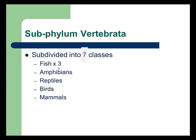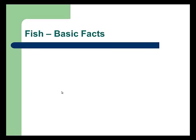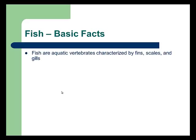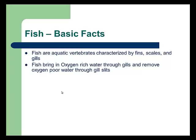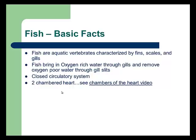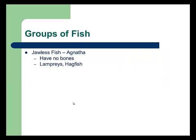Fish have three classes, then amphibians, reptiles, birds, and mammals — we'll go through all of these individually. Fish in general are characterized by fins, scales, and gills. The gills bring in oxygen-rich water and remove the oxygen, pouring water through gill slits. Fish use a closed circulatory system, enclosed in vessels to keep it efficient, and a two-chambered heart, which is not very efficient — we'll discuss heart chambers in class.